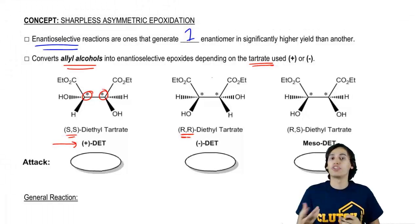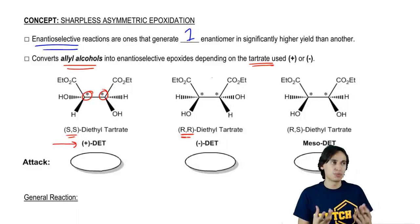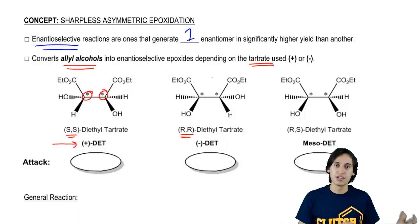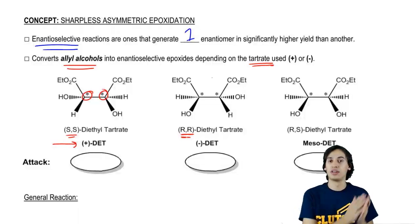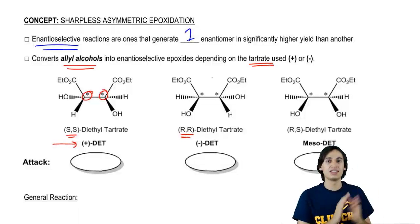The opposite rotation, but of the other configuration. So for example, if it was positive 20 degrees, then it would be a negative 20 degrees rotation with the negative DET.